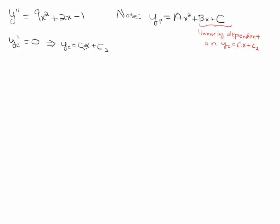And you notice that if you were to guess a particular solution of Ax squared plus Bx plus C, because you see a second degree polynomial here, this part of the solution can be written as a linear combination as the complementary solution. So this part of the solution is linearly dependent upon the complementary solution.